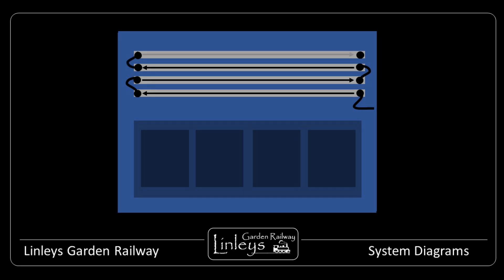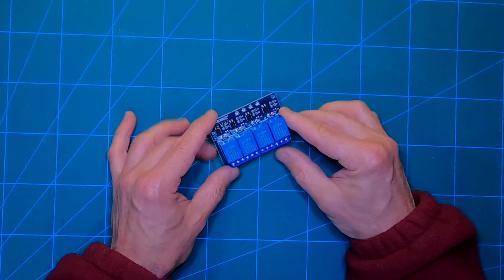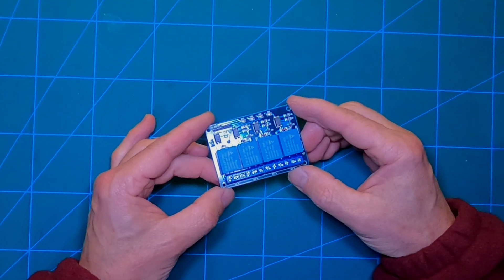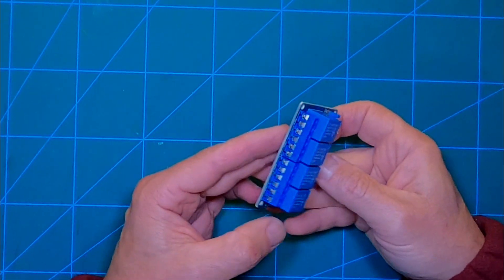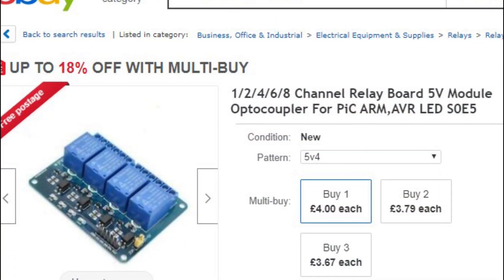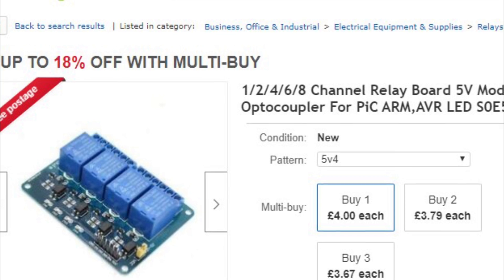Then, the various levels of resistance are achieved by switching in and out some of the windings. This is done by using the relays mounted just below. The relay block is a standard 4-channel SPDT relay unit commonly used with Arduino and other boards for project development.